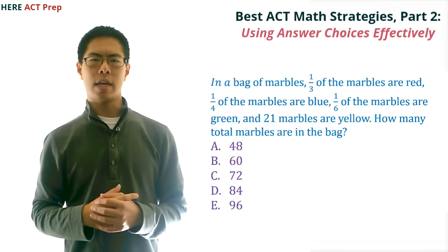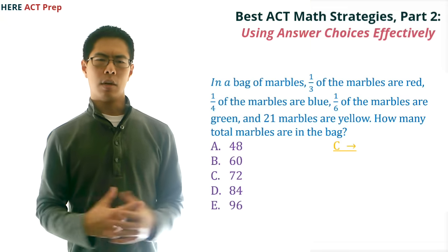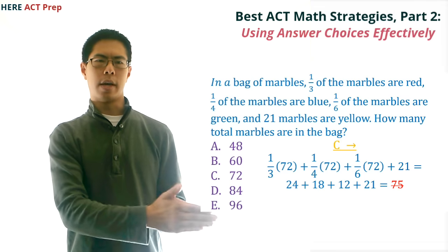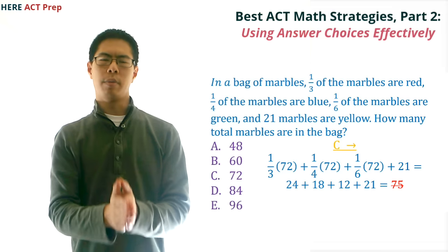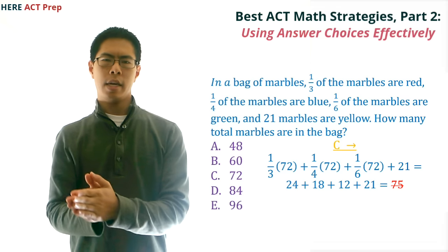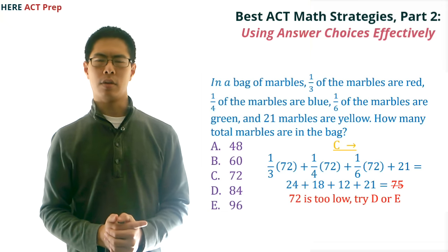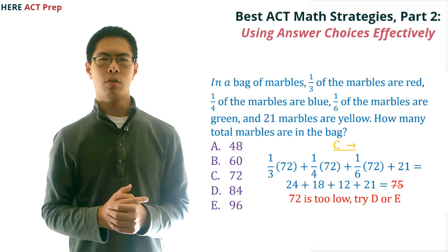So here's how we could use the answer choices. Let's start with C, which is 72. If there are 72 marbles in the bag, then one-third or 24 are red, one-fourth or 18 are blue, one-sixth or 12 are green, and 21 are yellow. This adds up to 75 marbles, which is higher than 72, so we know that 72 is too small.